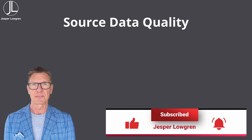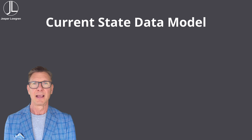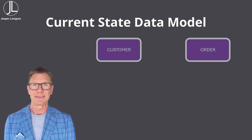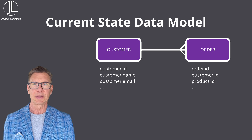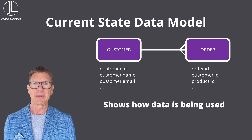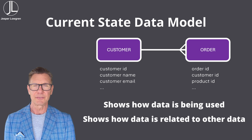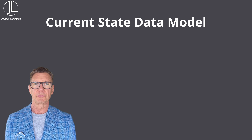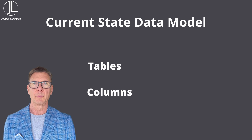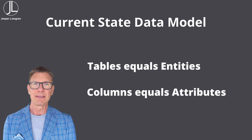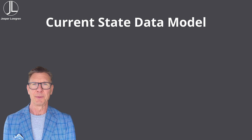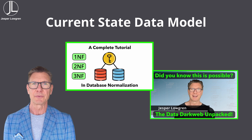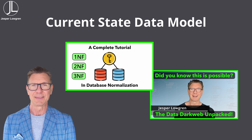The second success factor is a current state data model. The basis of a data model are entities, relationships between entities, and attributes. A current state data model shows the data being used and its relationships with other data. Sometimes the terminology of tables and columns is used — for the purpose of this video, an entity is the same as a table and an attribute is the same as a column. If you need a refresher on data normalization, I've made a couple of videos explaining the concepts with links in the video description.